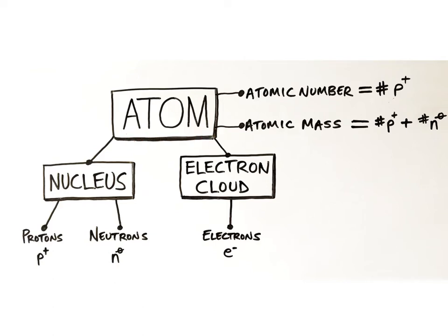Atoms are the building blocks of matter and all elements are made of atoms. An atom of an element is an extremely tiny unit of matter that still possesses the properties and characteristics of the element. Think of atoms as the purest form of an element.